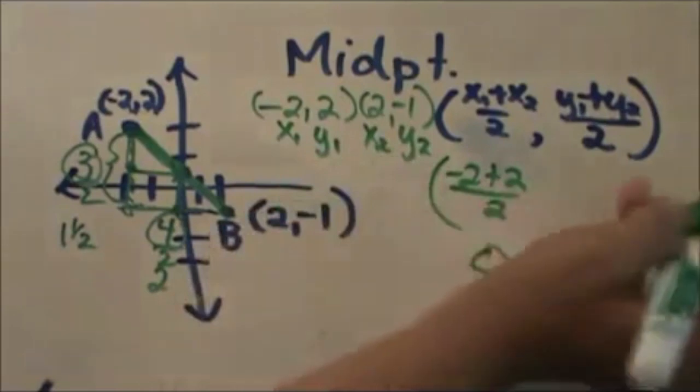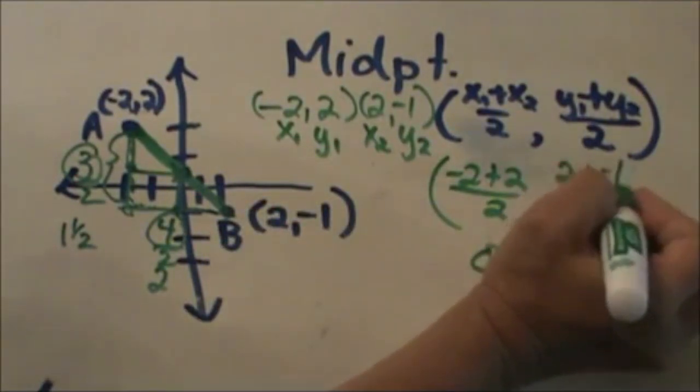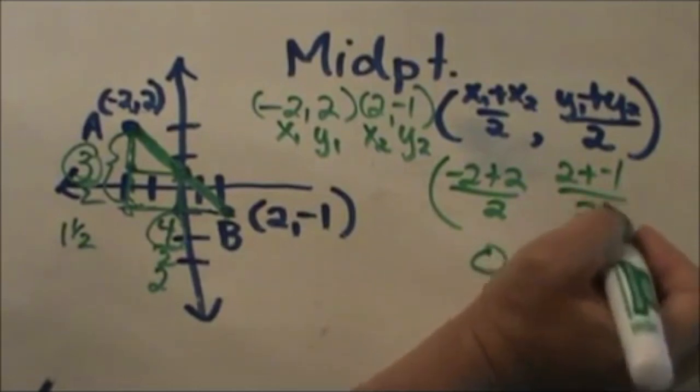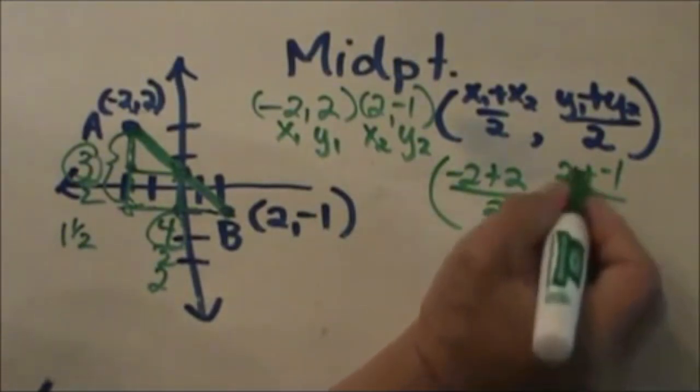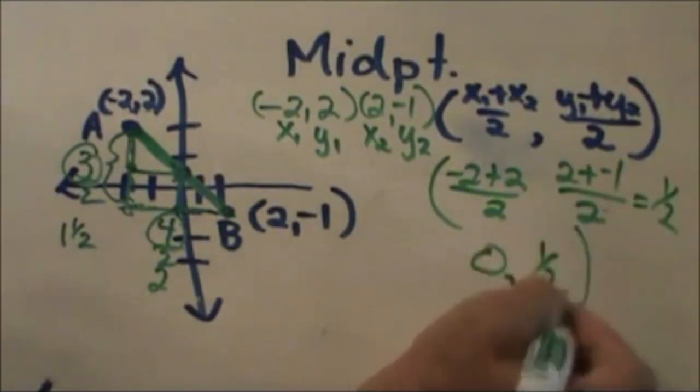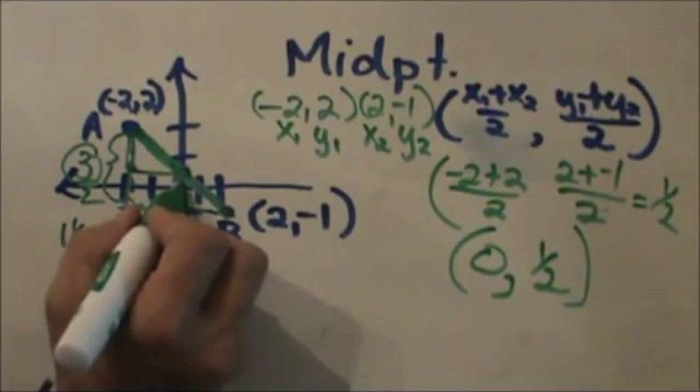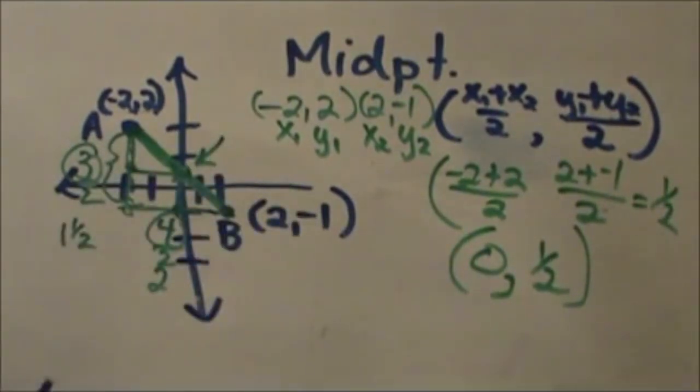Then I am going to do the same thing with my y-coordinates. 2 plus negative 1 is positive 1, 1 over 2 is just a half. So that means my ordered pair is at (0, 1/2) and that is my midpoint.